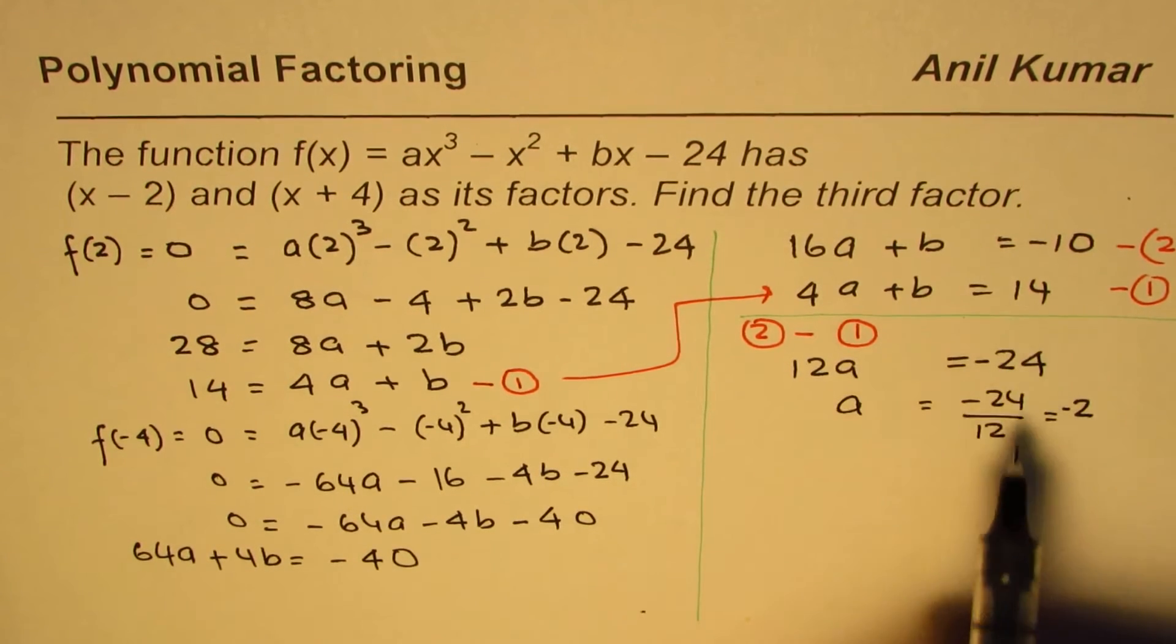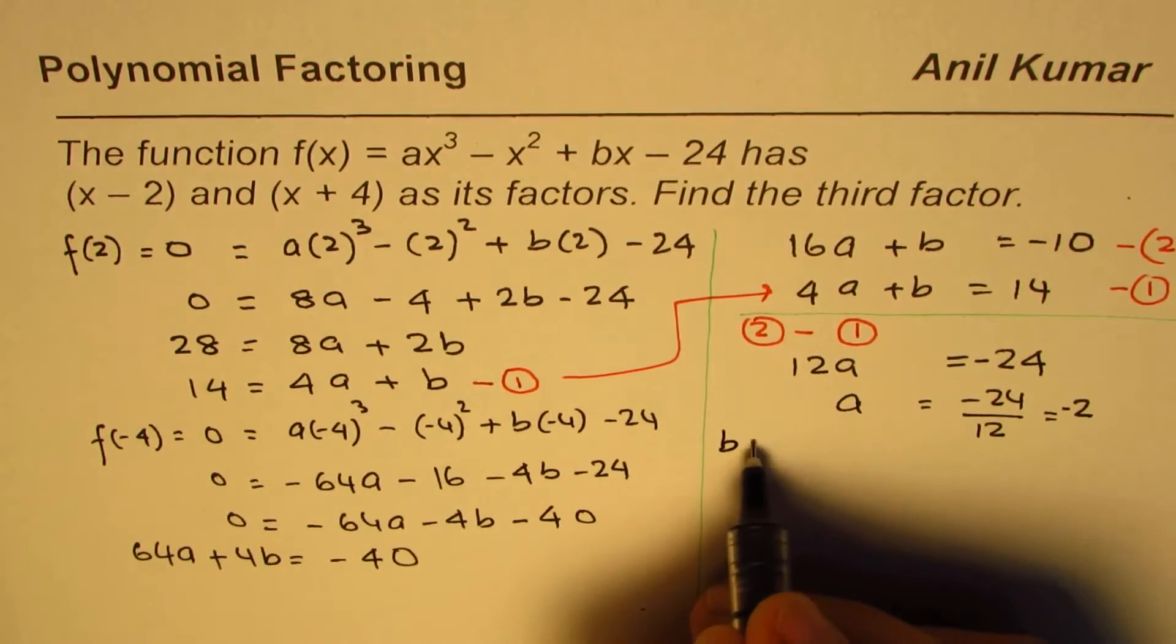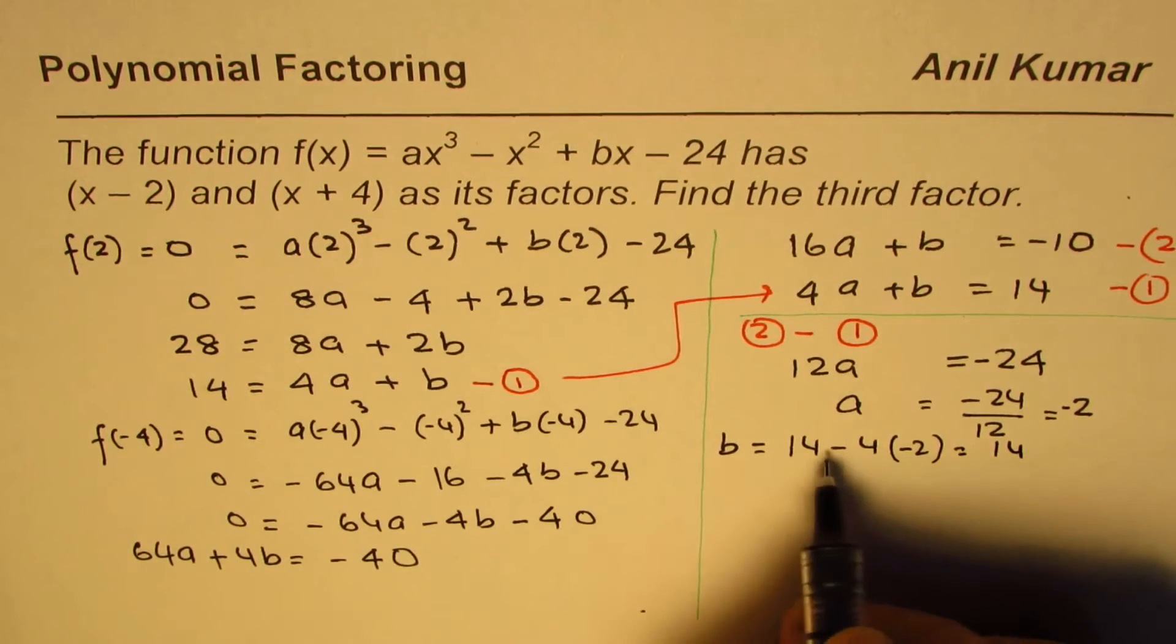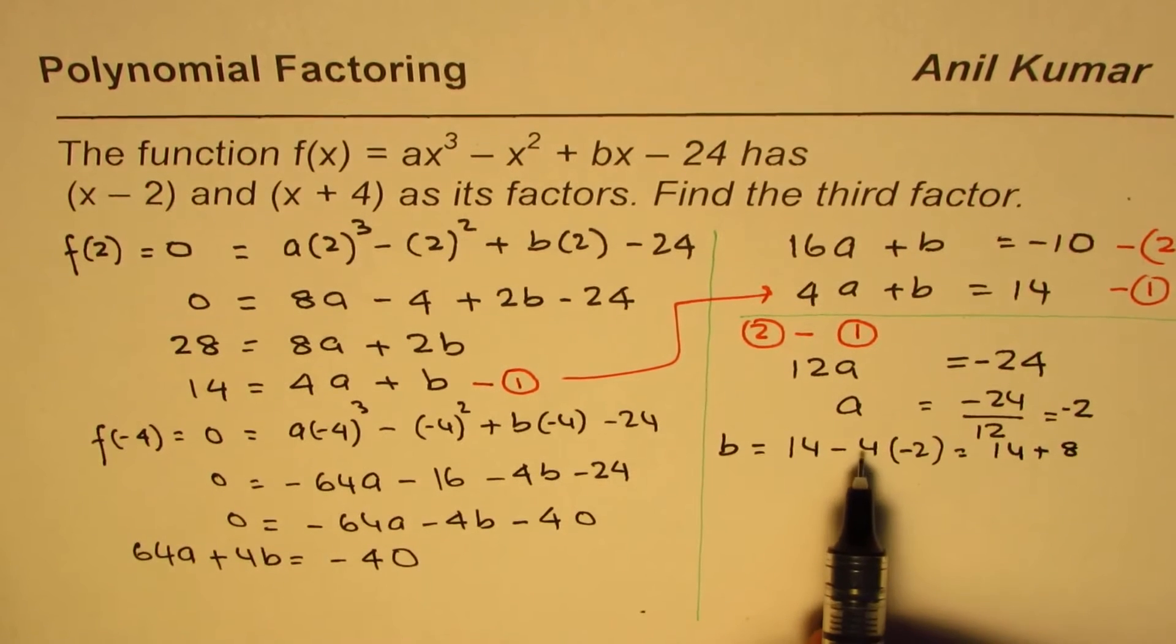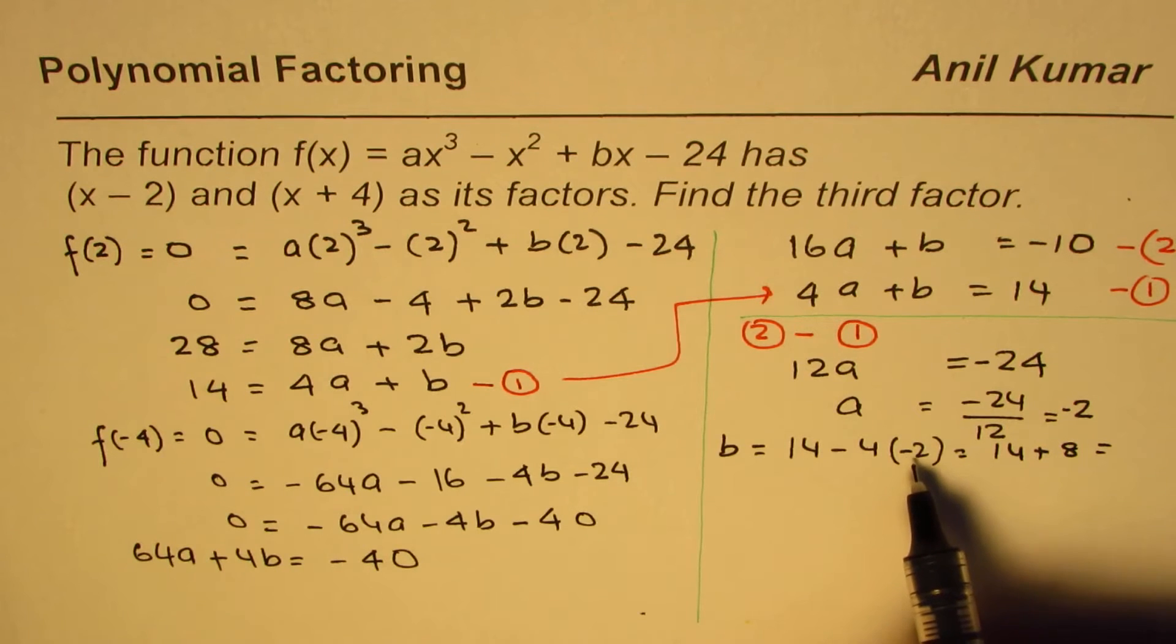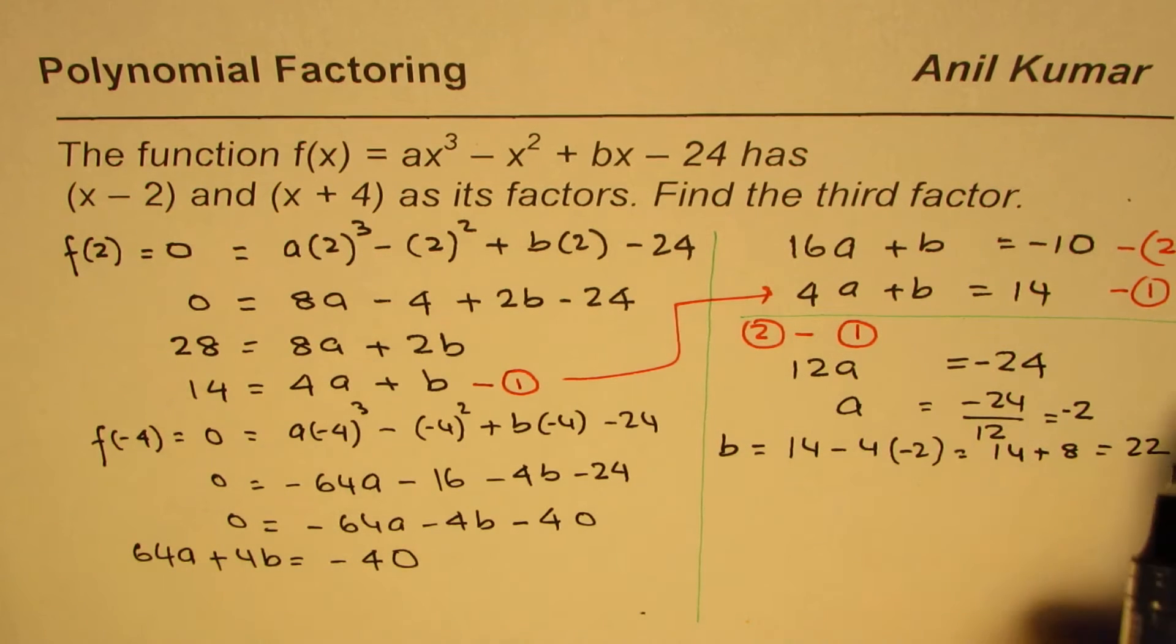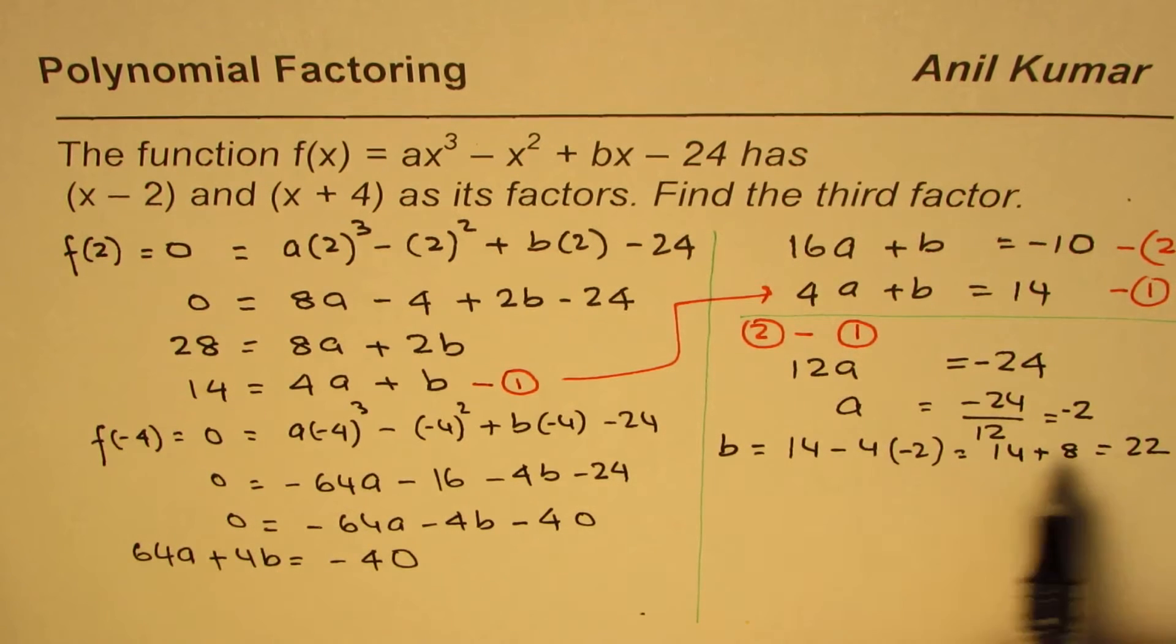You can find the value of b by substituting a as minus 2. So b equals 14 minus 4 times a, which is minus 2, which is 14 plus 8, and that gives you 22. So we get the value of b.